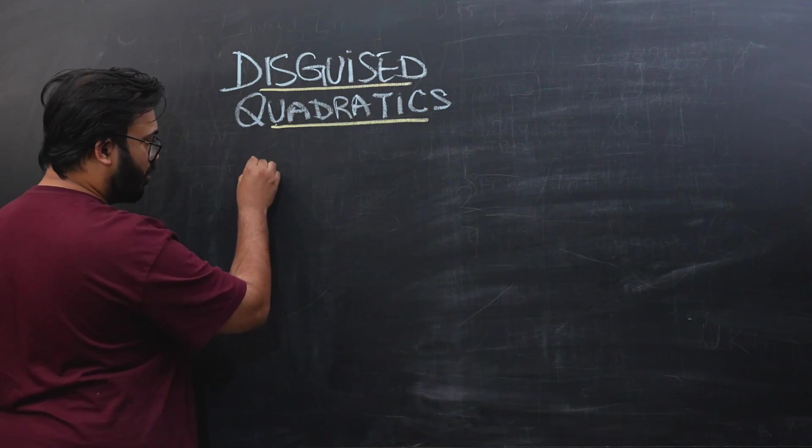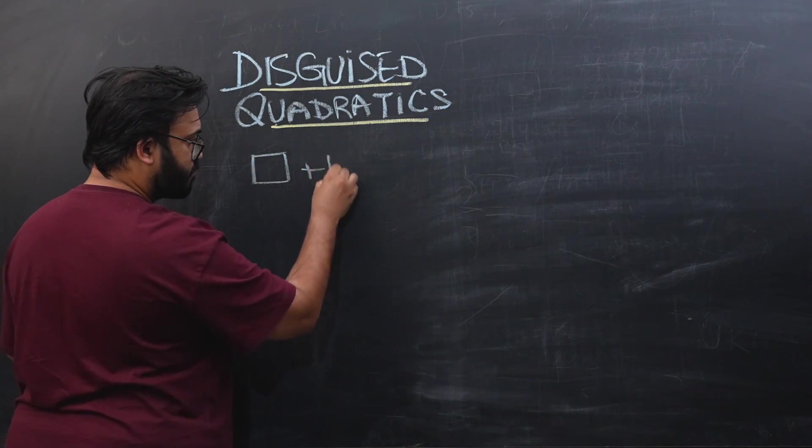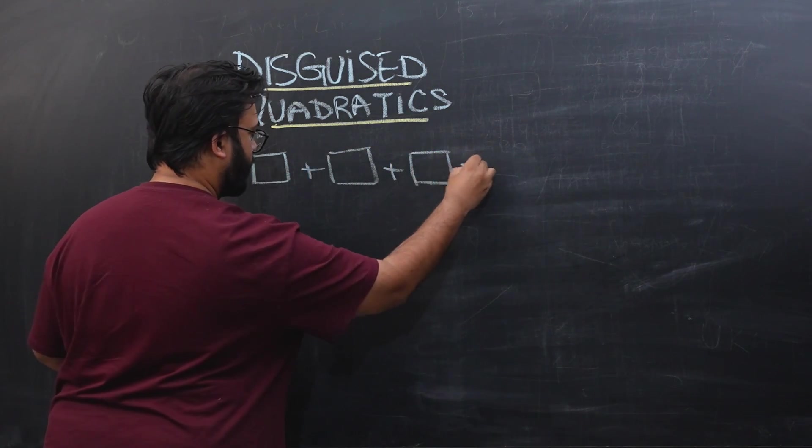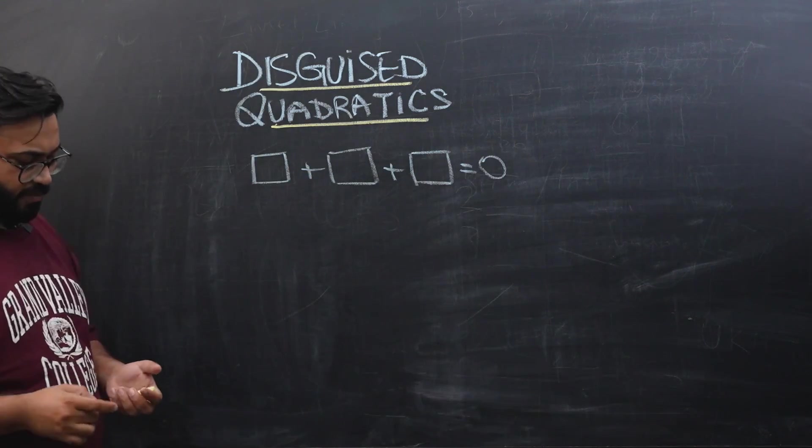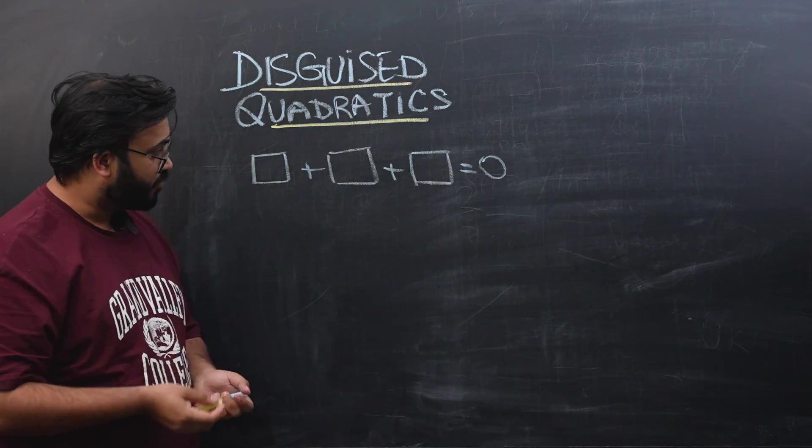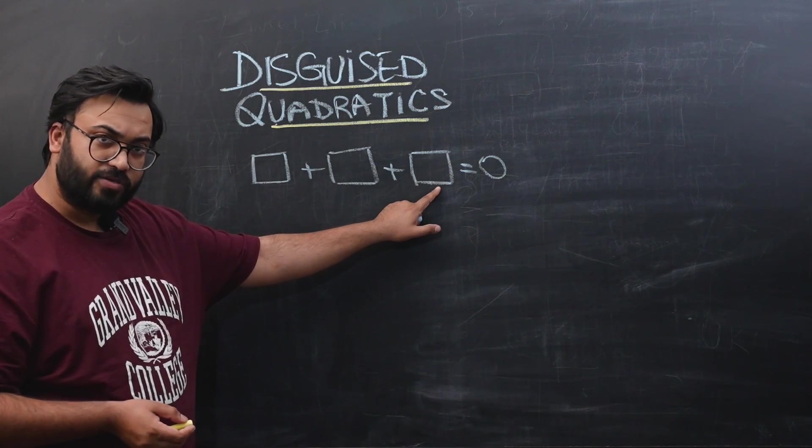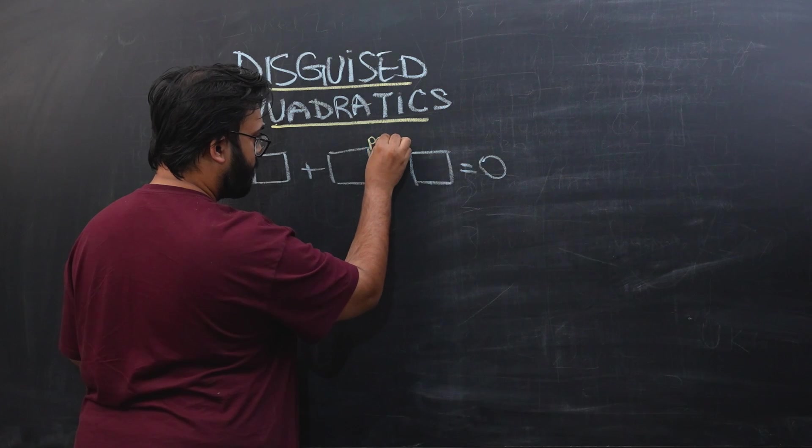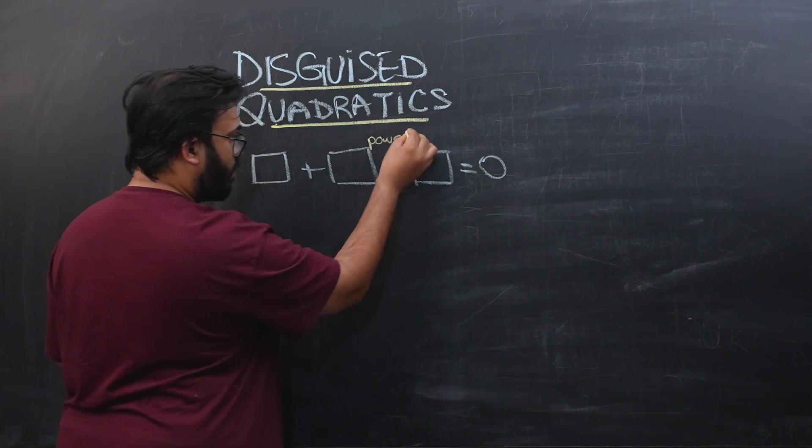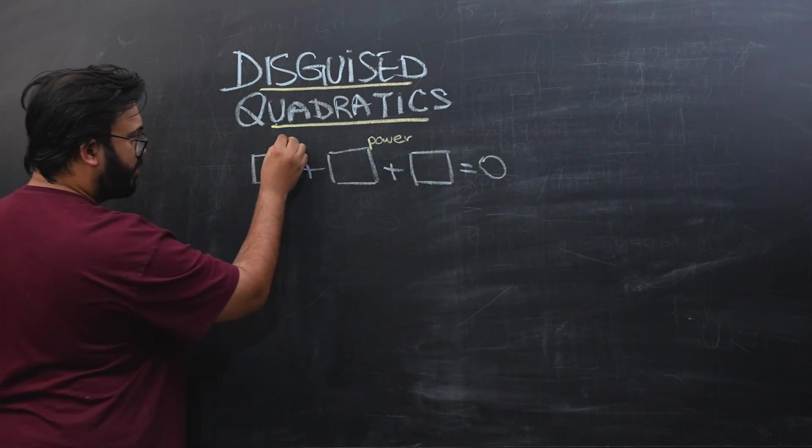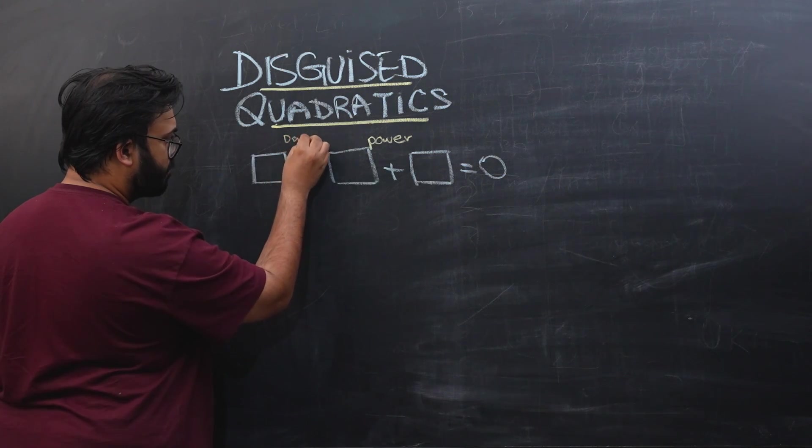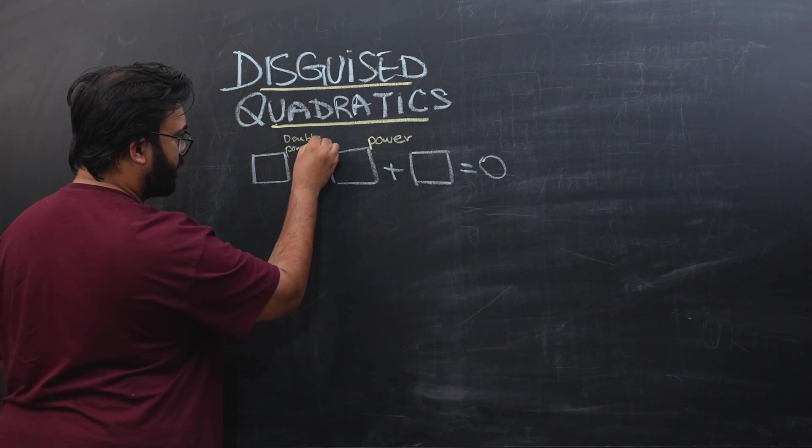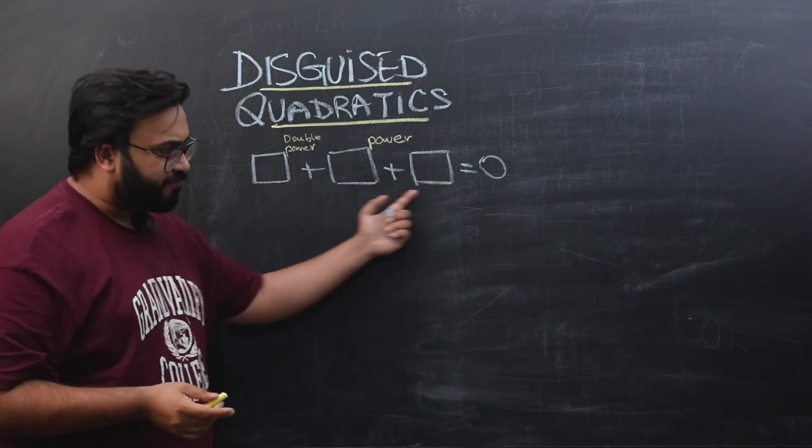It's always going to be a three-term equation, so always watch out for three-term equations equal to zero. This is how the entire equation would look like. The last term would be a constant usually. The middle term must have a power, some power, and double of that power would be on the first term. We are looking for this pattern.